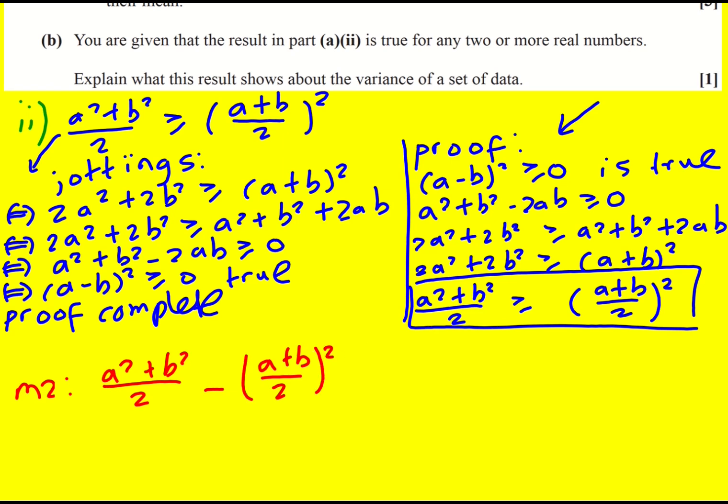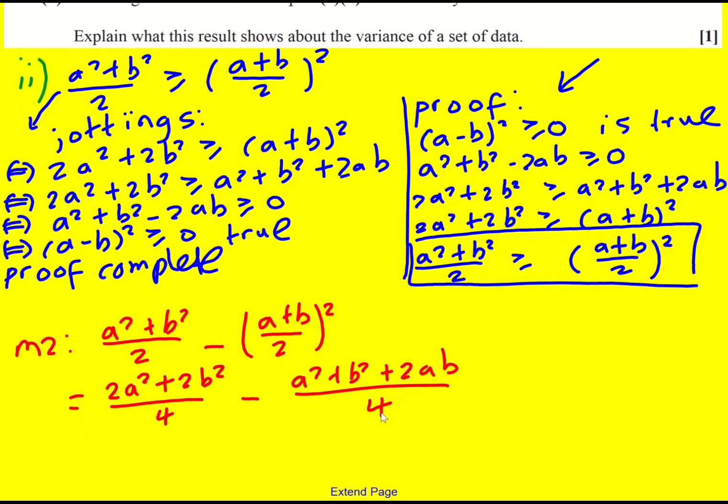It is a nice approach and it avoids all this jottings sort of stuff. So this is going to equal, I'm going to put it over a common denominator, so 2a squared plus 2b squared over 4, just times top and bottom by 2, because I know now I'm going to get a squared plus b squared plus 2ab when I square the top divided by 4 on the bottom.